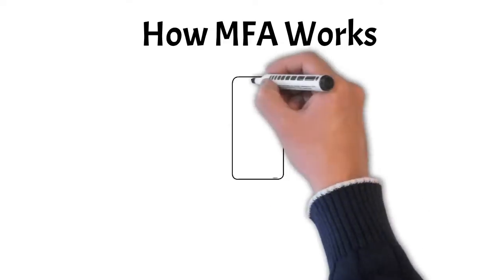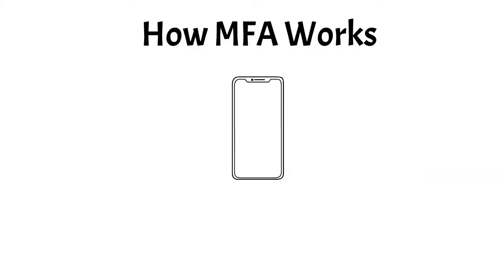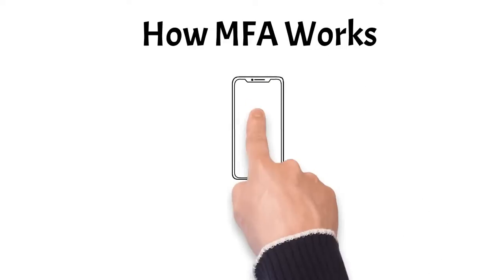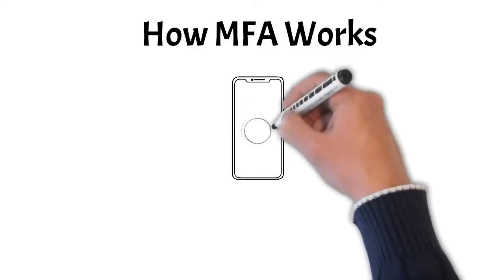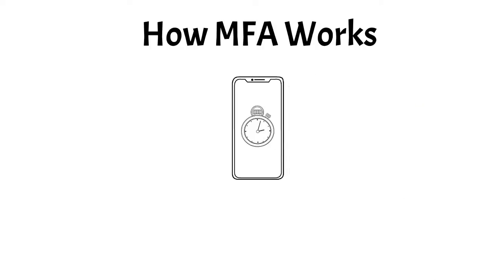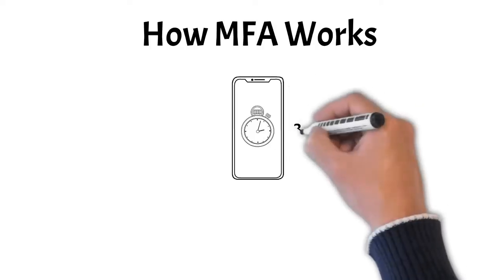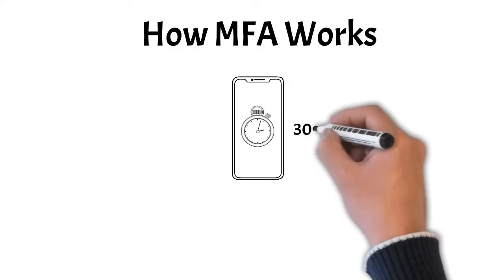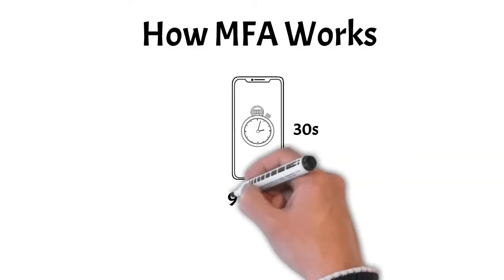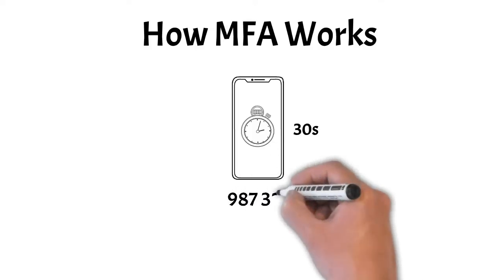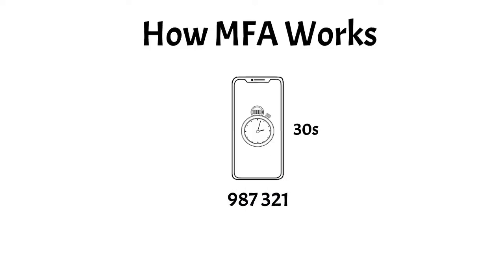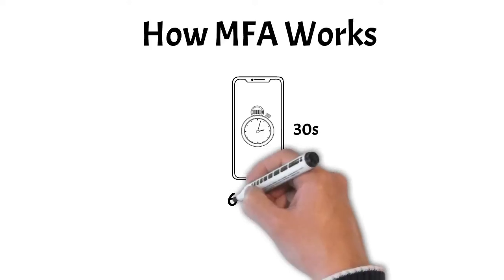But how does the app work? The app on your phone acts little more than a clock. Every 30 seconds or so, it creates a new six-digit number code for you to enter for each of the accounts that you have set up in the app.